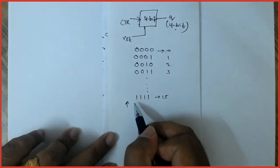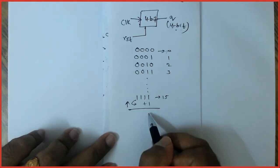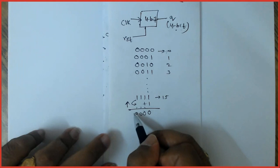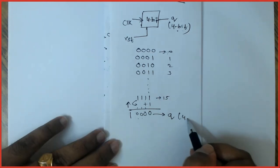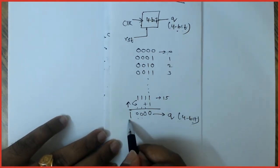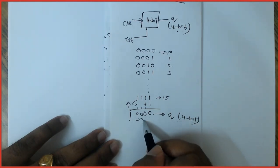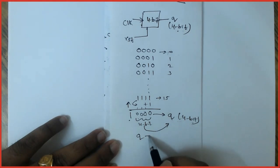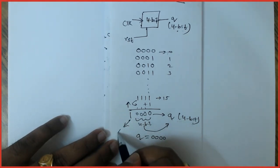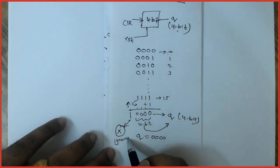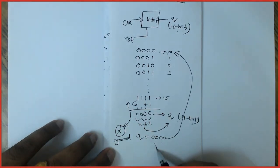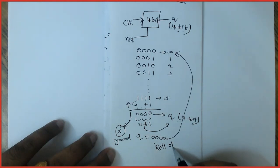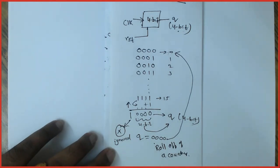Once it reaches 15, if a positive edge is encountered, it will be incremented once again. What happens is basic addition with carry: you will have 10000, and this is to be assigned to Q which is of 4-bit. Since it is of 5 bits, it gets truncated. The least significant 4 bits will be assigned to Q, hence Q will get the value 0000. This means it is again rolling back to the start value. This phenomenon we call roll-off of a counter.